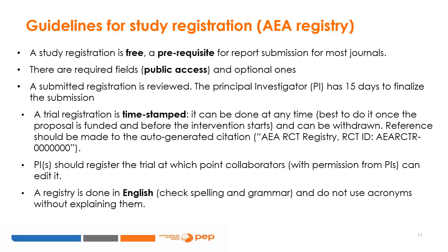Trial registration is electronically time-stamped for a journal submission. The date and time of the final submission is recorded and the PI will get proof of registry — a serial number unique to each study — with the date and time at which the study was registered. It is best to register once the proposal is funded and before the research work actually starts. Note that the registry can be withdrawn. As with most scientific research, a study registry is in English — please check spelling and grammar, and do not use acronyms without explaining what they mean.